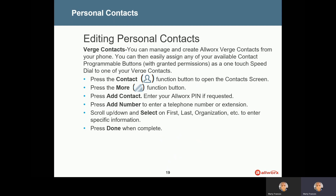Next, you add the number, then scroll up and down to enter either a first or last name, an organization, or other specific information. When you're done, press Done. That will add the contact as a personal contact in your phone.